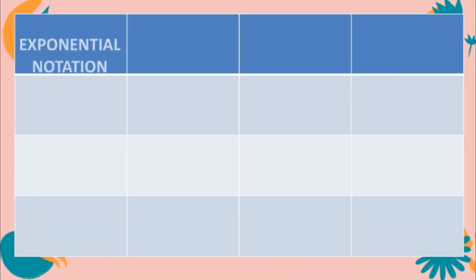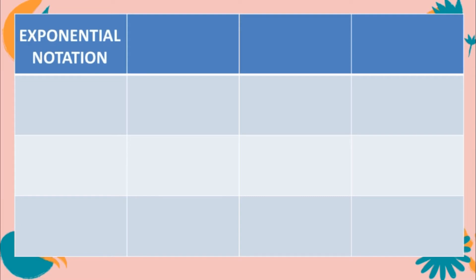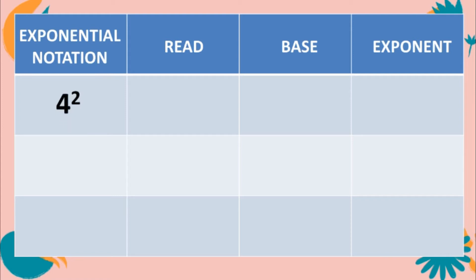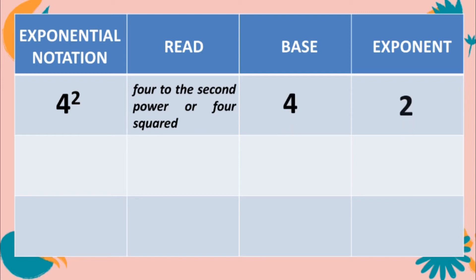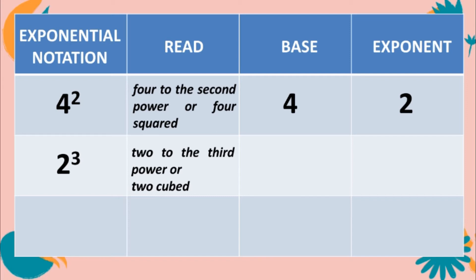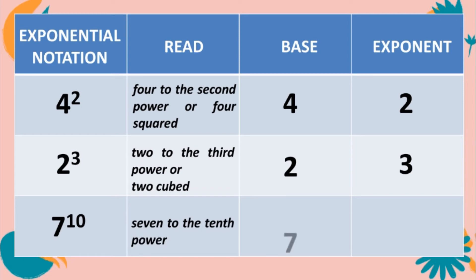Complete the table. The first column has exponential notation, the second column shows how to read it, the third column is for identifying the base, and the fourth column is for identifying the exponent. 4 to the second power or 4 squared — the base is 4 and the exponent is 2. 2 to the third power or 2 cubed — the base is 2 and the exponent is 3. 7 to the tenth power — the base is 7 and the exponent is 10.